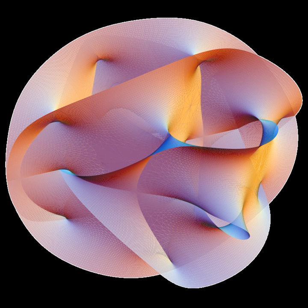Bosonic string theory is the original version of string theory, developed in the late 1960s. It is so-called because it only contains bosons in the spectrum.